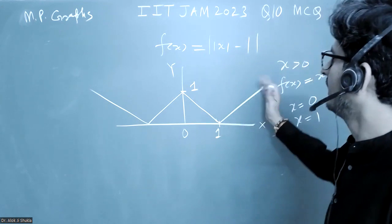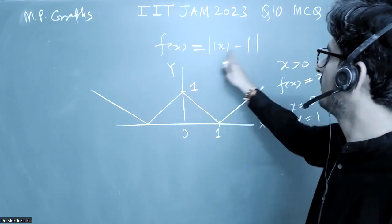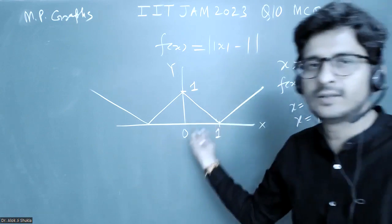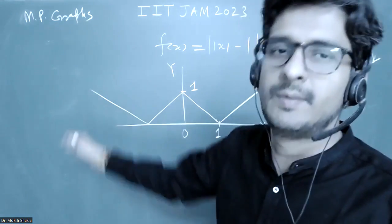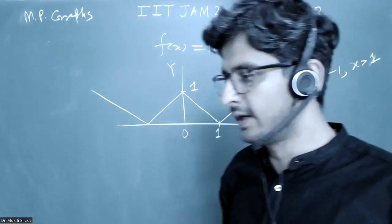And between this, I told you at x equals 0 it will become 1, so just join them on the right-hand side. And whatever is on the right-hand side, it will be on the left-hand side because it will be symmetric about the y-axis. It is a modulus function. Thank you.